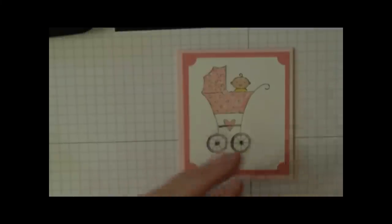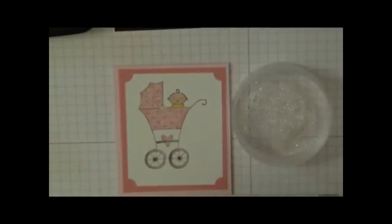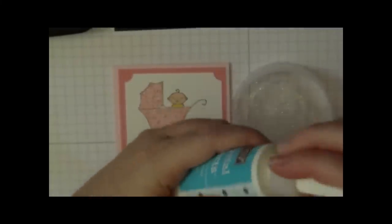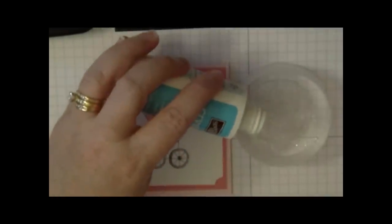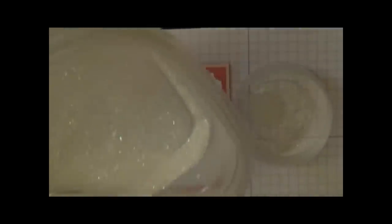So our next step, I'm taking a clear plastic container that I have that's empty. Well, actually it's been used. But I'm going to put some crystal effects inside here. And crystal effects are a wonderful accent to the card. So we're just going to pour some of that in there. We don't need too much. And then I'm going to add some dazzling diamond glitters to the mixture.